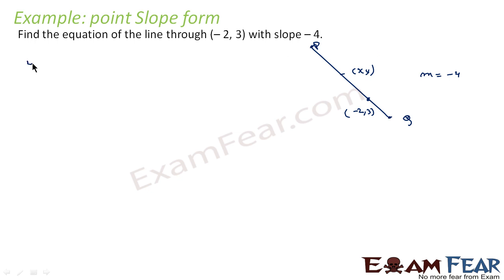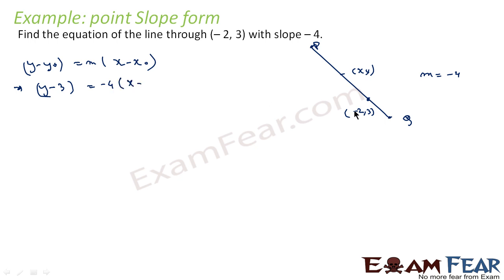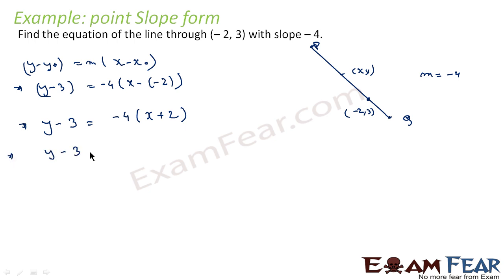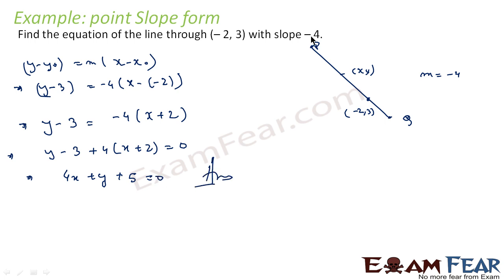We know the formula: y minus y0 is equal to m into x minus x0. So we can write y minus 3 is equal to −4 into x minus (−2), that is x minus minus 2. This gives y minus 3 is equal to −4 into (x plus 2), or y minus 3 plus 4(x plus 2) is equal to 0, which simplifies to 4x plus y plus 5 is equal to 0. That is the equation of this line.